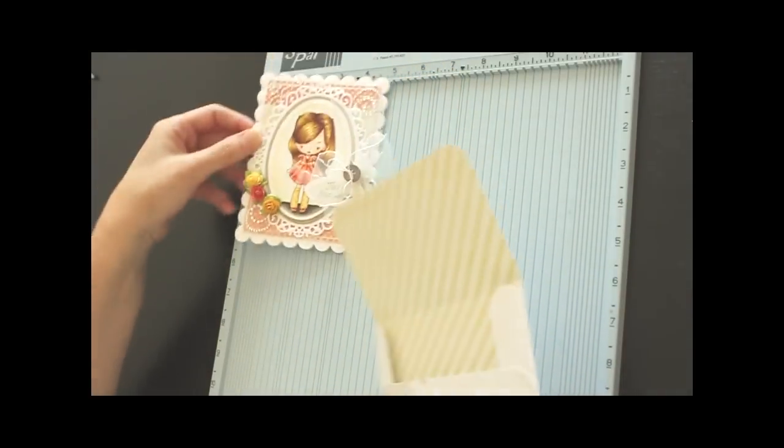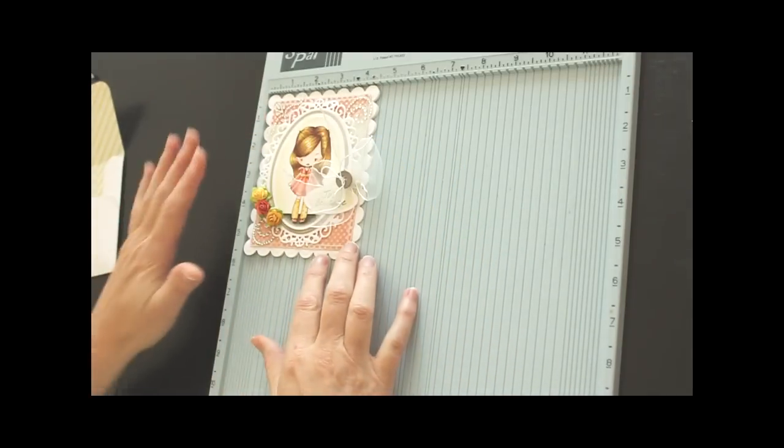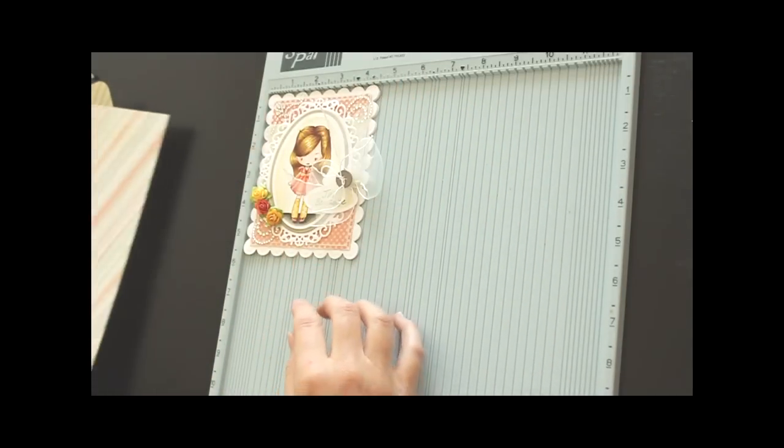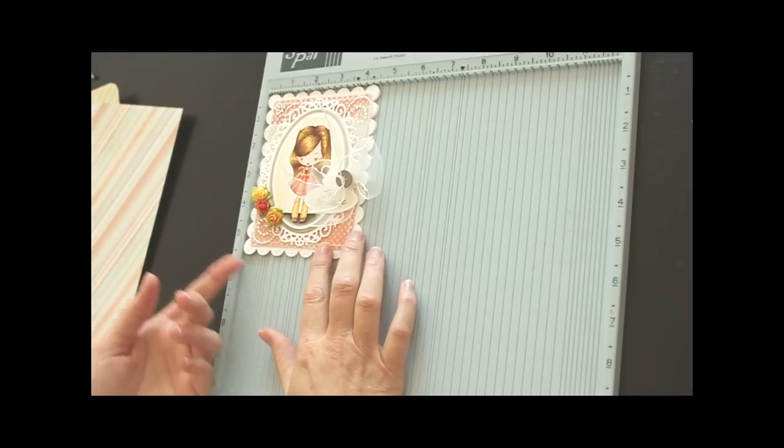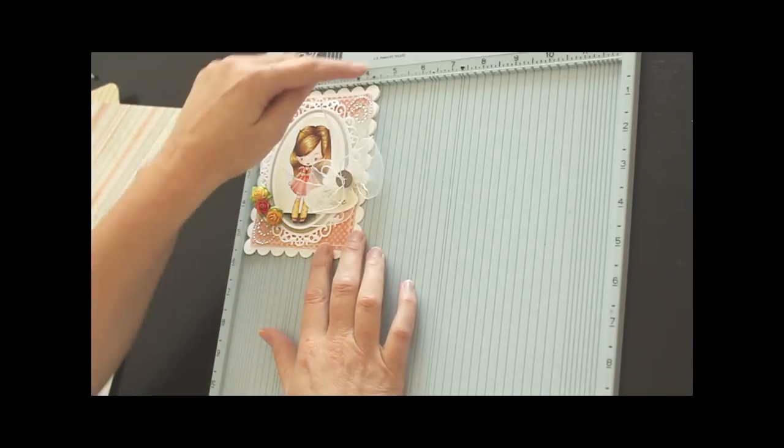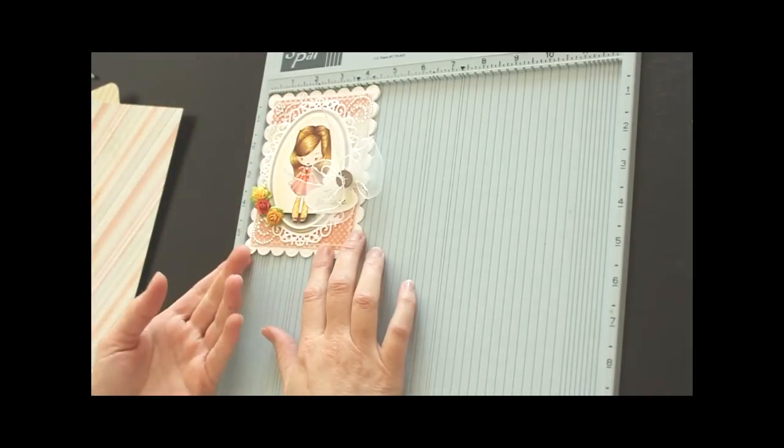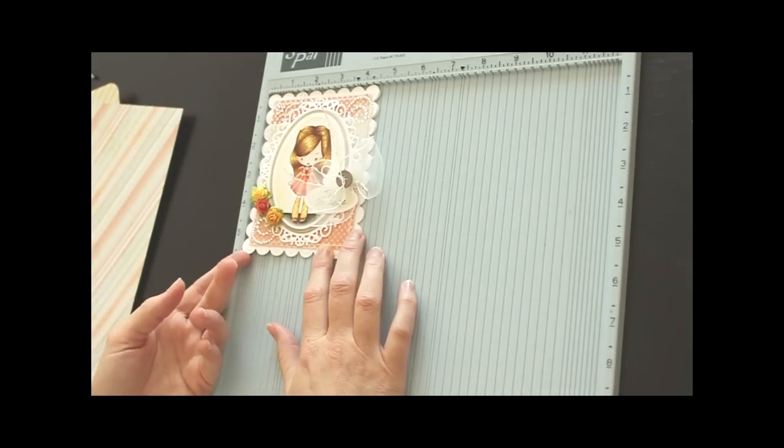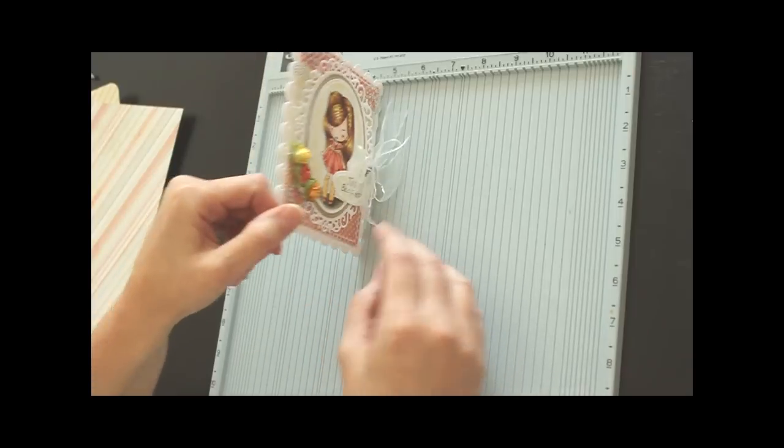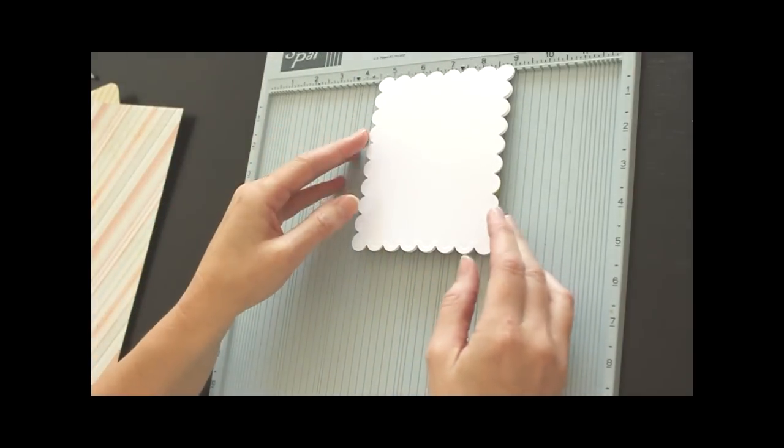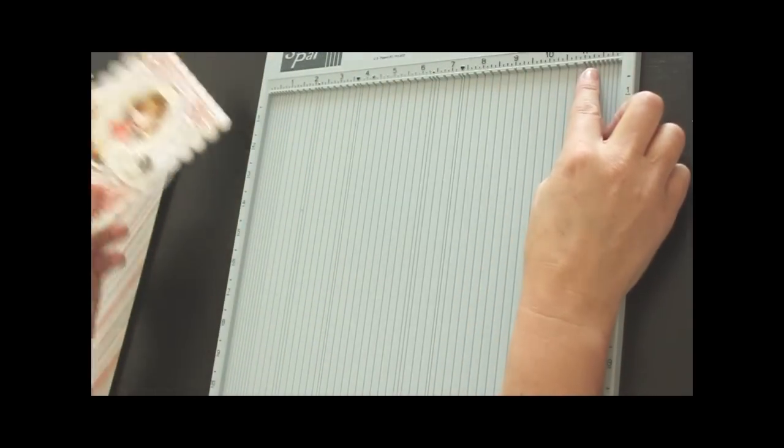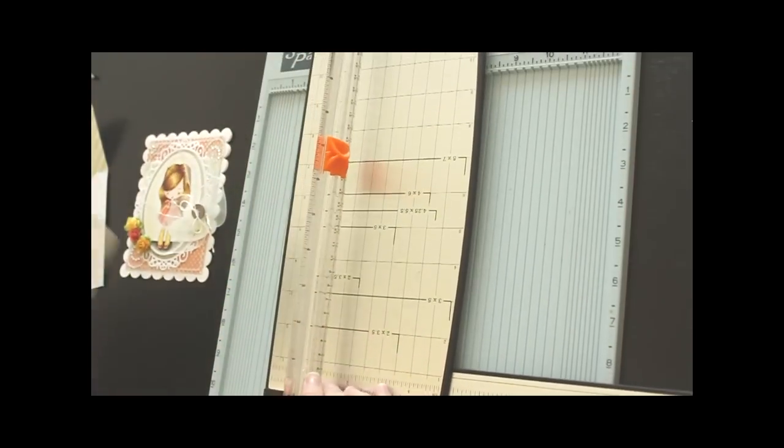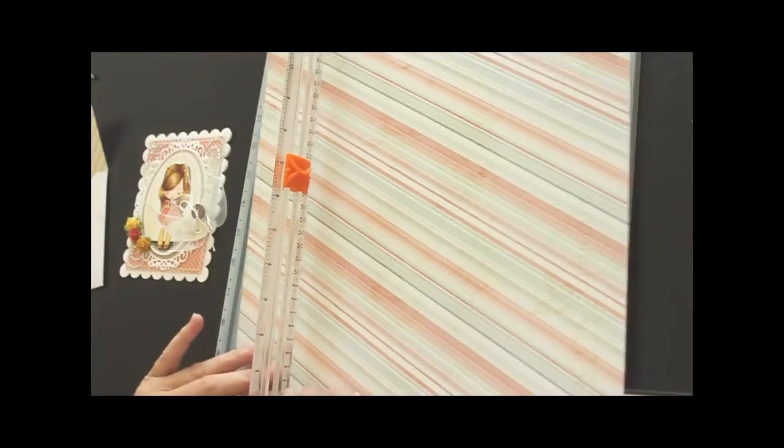To begin with, you will need to measure the short side of the card that you want this envelope to be for. Times it times 2, so 4 1/2 times 2 is 9, and then add 2 inches, which will be 11. If you do not like math, you just flip your card over once and then add 2 inches. So we're at 11 inches. Cut my paper down.